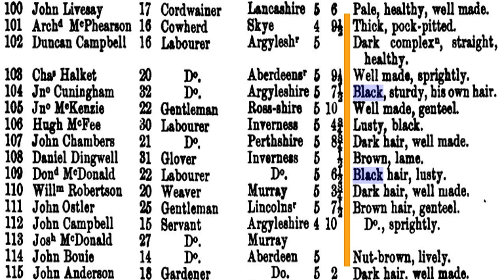This information is important because when you look at census data, professions are listed — and this might be helpful because you might see a profession running through a family. You might see a great-great-great grandparent who was a weaver and then successive generations following that same trade. For instance, if your surname is Robertson, you might find successive generations of Robertsons in the weaving profession.